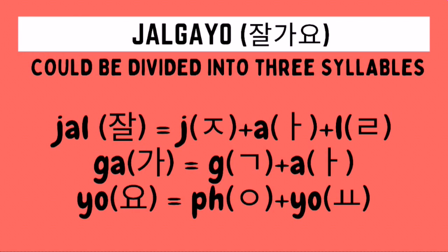How do we write Jalgayo in Hangul? Let's start with the first syllable. To write the syllable Jal in Hangul, we need to draw first a G-character, followed by an A-character, followed by an R-character. For the second syllable Ga, we need to draw first a G-character, followed by an A-character. For the last syllable Yo, we need to draw first a placeholder silent I-character, followed by a Yo-character.